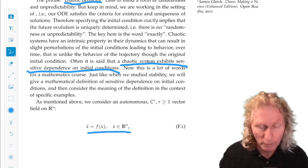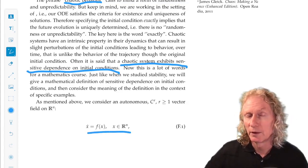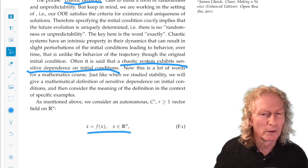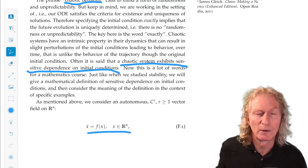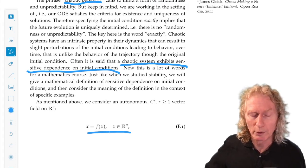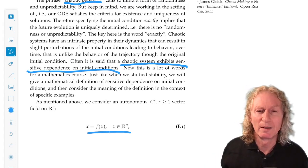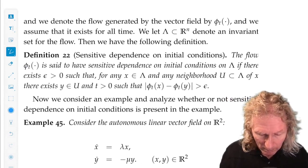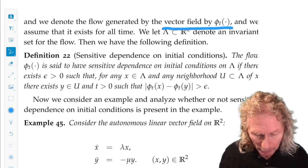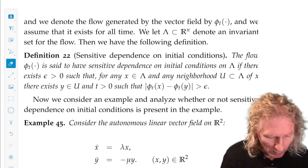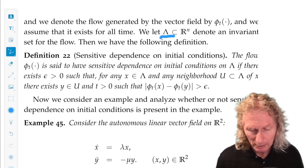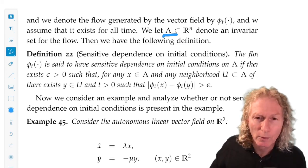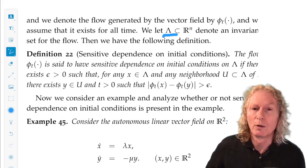So let's establish a setting. We'll talk about autonomous vector fields in R^n, existence and uniqueness, so C^r, r greater than or equal to 1. Chaos occurs in much more generality. It occurs for non-autonomous systems, for discrete time systems, for infinite dimensional systems, or partial differential equations. We're just going to talk about the basic setting that we dealt with in the course. The flow generated by this vector field will be our usual terminology, and we're going to let lambda denote an invariant set for the flow.